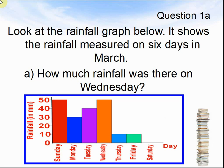Look at the rainfall graph below. It shows the rainfall measured on 6 days in March. How much rainfall was there on Wednesday? Pause the video until you are ready to see the next question.